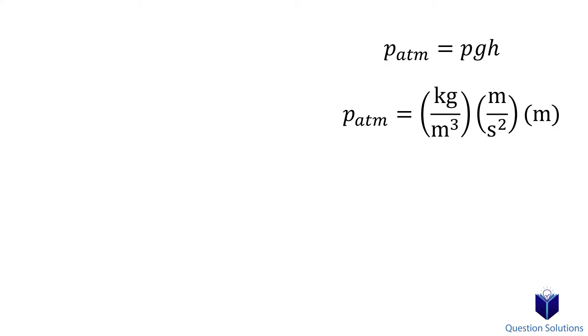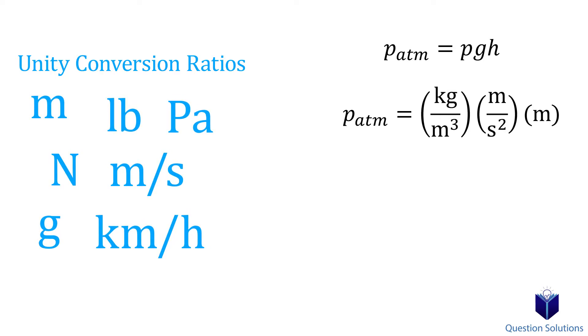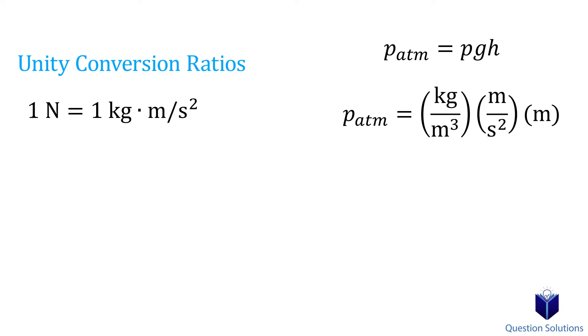We can use something called unity conversion ratios. The basic idea is to use units we know to figure out what we don't know. So for example, we know that one newton is equal to one kilogram meter per second squared.